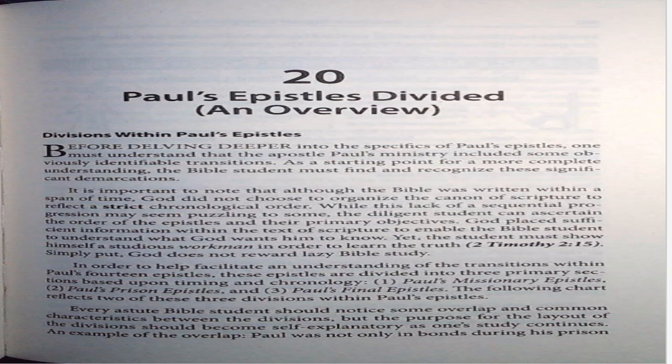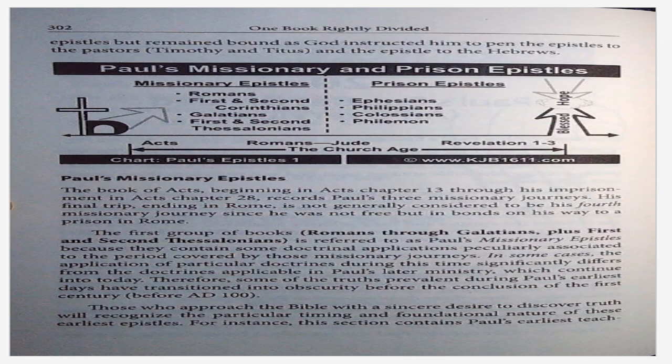An example of the overlap: Paul was not only in bonds during his prison epistles, but remained bound as God instructed him to pen the epistles to the pastors Timothy and Titus, and the epistle to the Hebrews. The chart on page 302 is titled Paul's Missionary and Prison Epistles. Paul's missionary epistles — the book of Acts, beginning in Acts chapter 13 through his imprisonment in Acts chapter 28, records Paul's three missionary journeys.